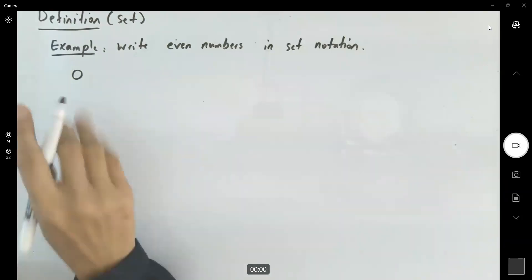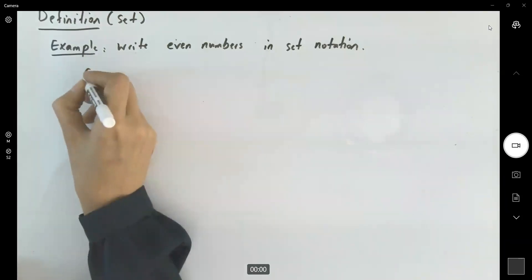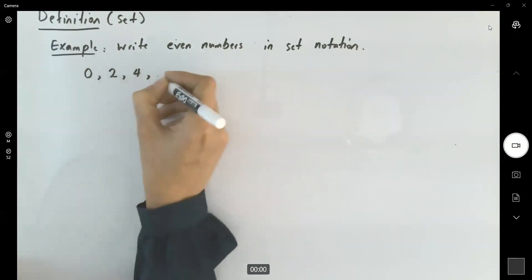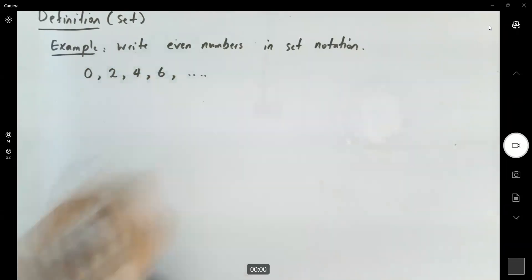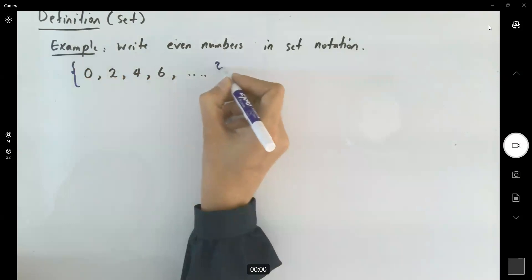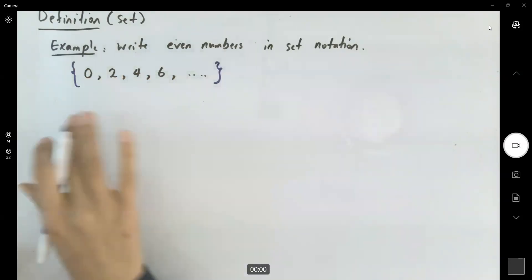So you might say that zero is the smallest even number, then it's two, then it's four, then it's six, and so on. As long as you put that in set symbols, curly brackets, you should be fine.